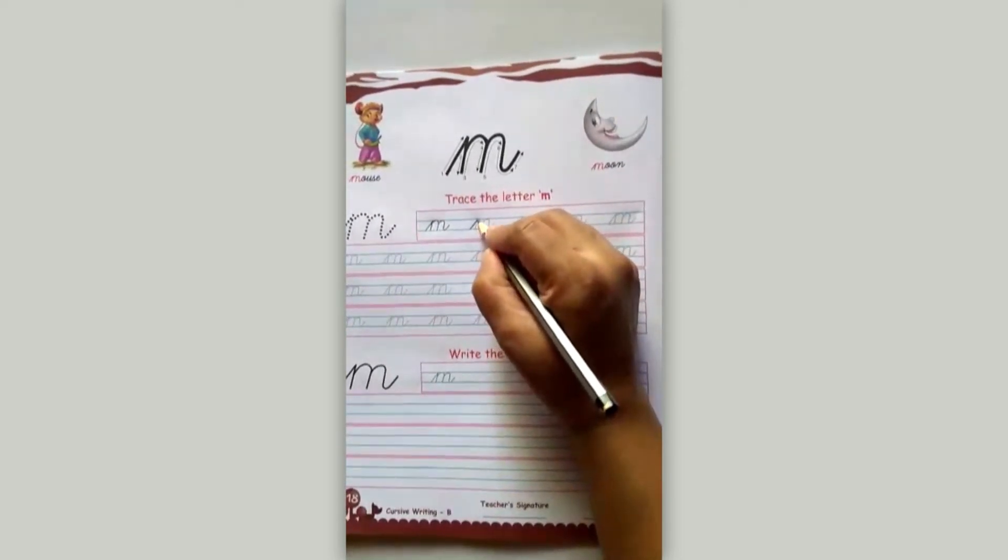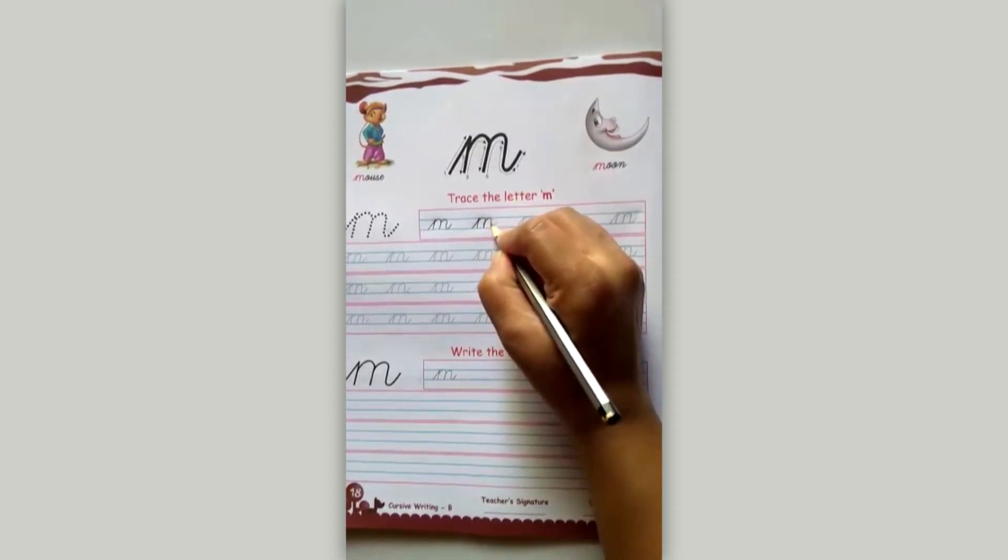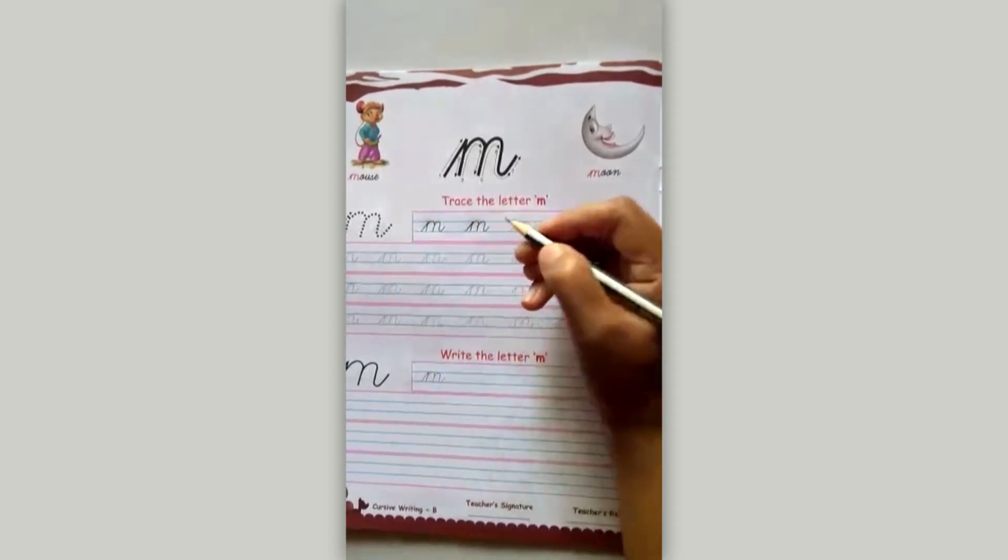A line. Slanting line. Come down. Go up. And line. Go up. And come down. And like this.